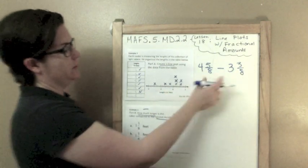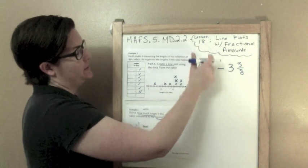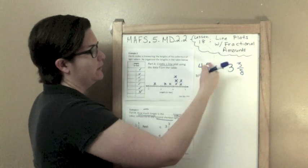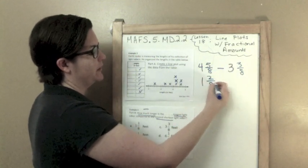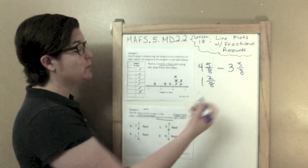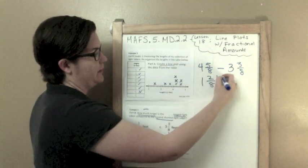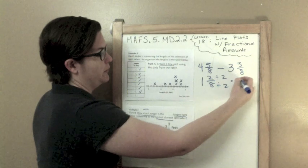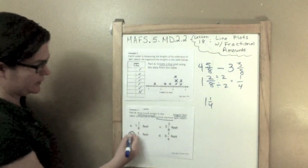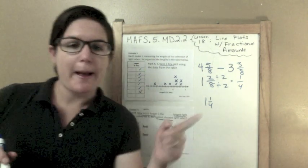So 4 and 5 eighths minus 3 and 3 eighths. Do our denominators match? Yes! And this fraction is greater, so we can just start going across. 4 minus 3 would be 1, 5 minus 3 would be 2. Keep your denominator the same. And that would be 1 and 2 eighths, but that's not here because we could reduce this further. Divide by 2, divide by 2, and we would get 1 fourth. So 1 and 1 fourth of a foot.